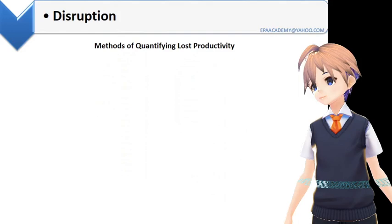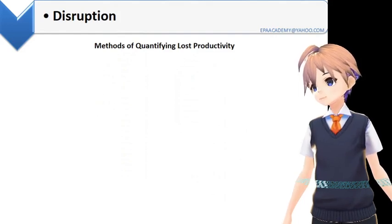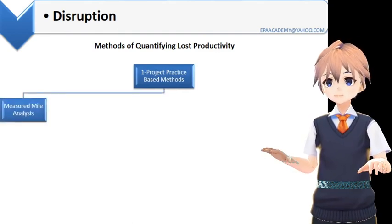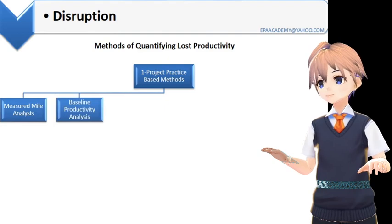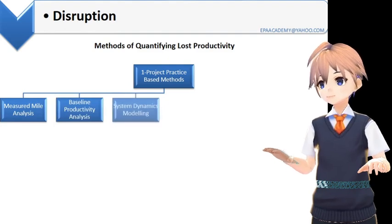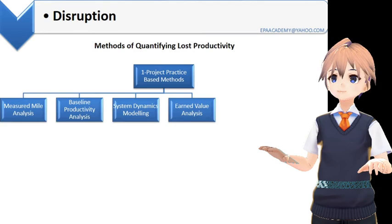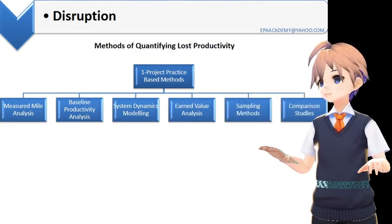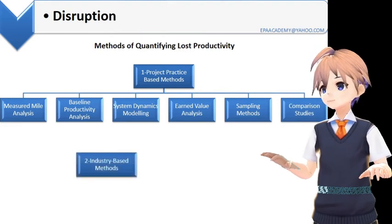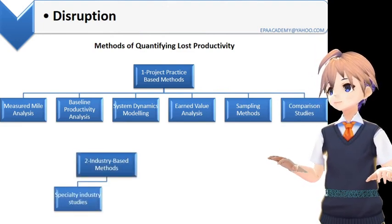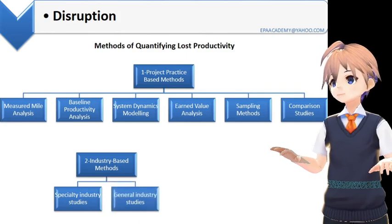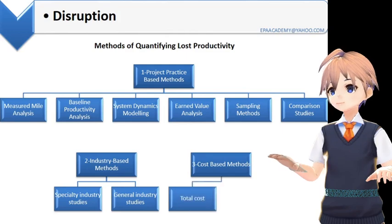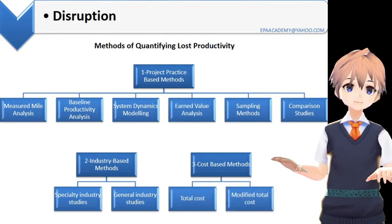Methods of quantifying lost productivity fall into three groups. First, project practice-based methods: measured mile analysis, baseline productivity analysis, system dynamics modeling, earned value analysis, sampling methods, and comparison studies. Second, industry-based methods: specialty industry studies and general industry studies. Third, cost-based methods: total cost and modified total cost.